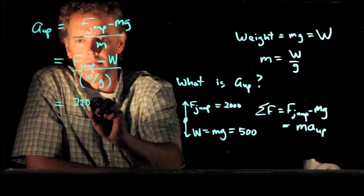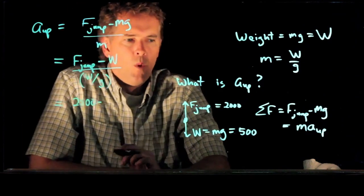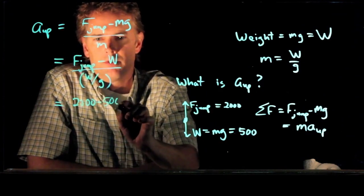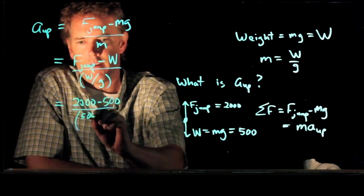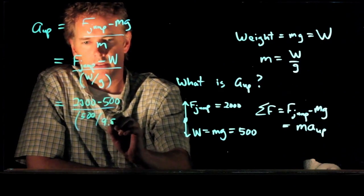F_jump was 2,000 newtons. Weight was 500 newtons. We're going to divide by the weight 500 over g, which is 9.8.